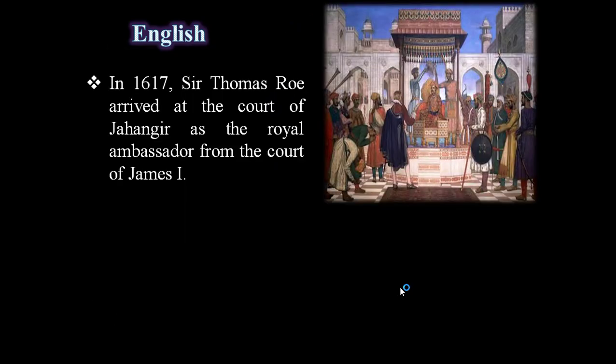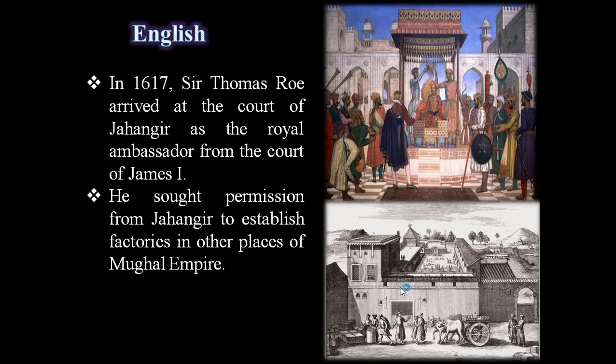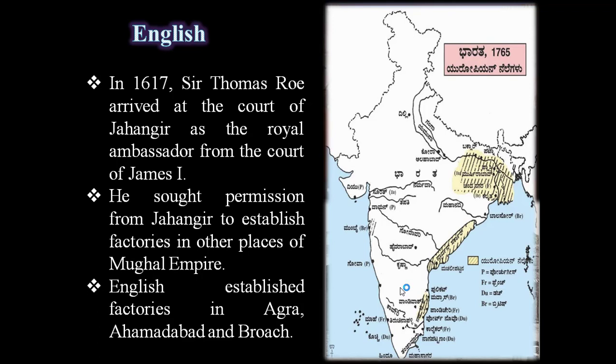In the year 1617, Sir Thomas Roe arrived at the court of Jahangir as the royal ambassador from the court of King James I of England. He sought permission from Jahangir to establish factories in other places of the Mughal Empire. As a result, the Mughal Empire gave permission to establish English factories in Agra, Ahmedabad, and Broach.